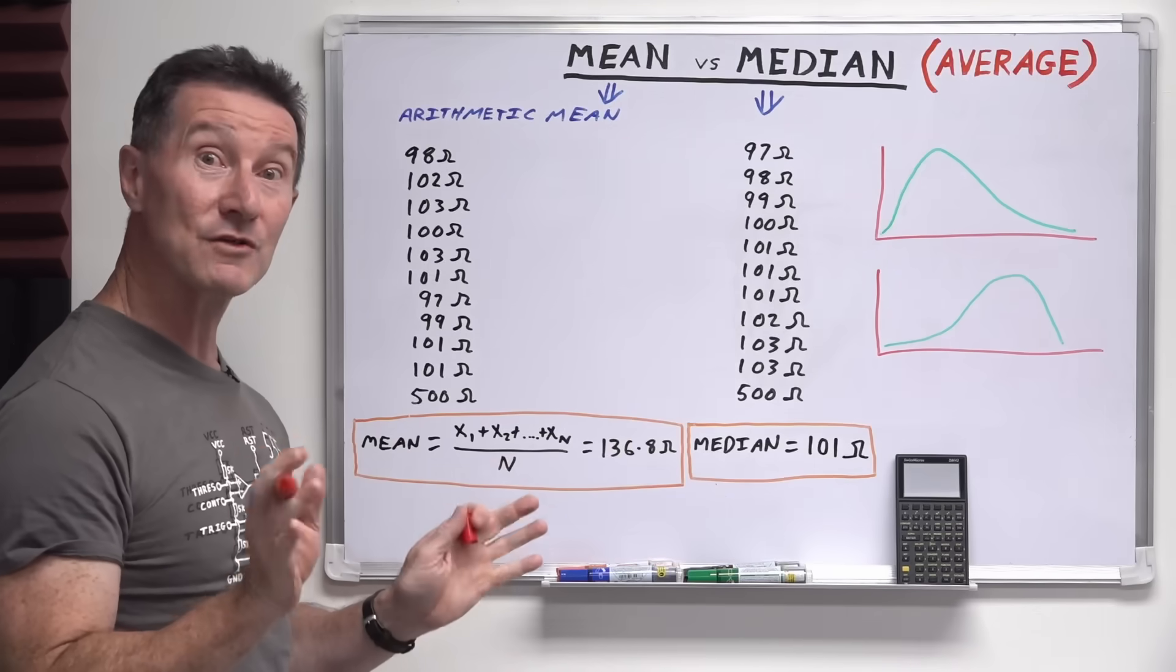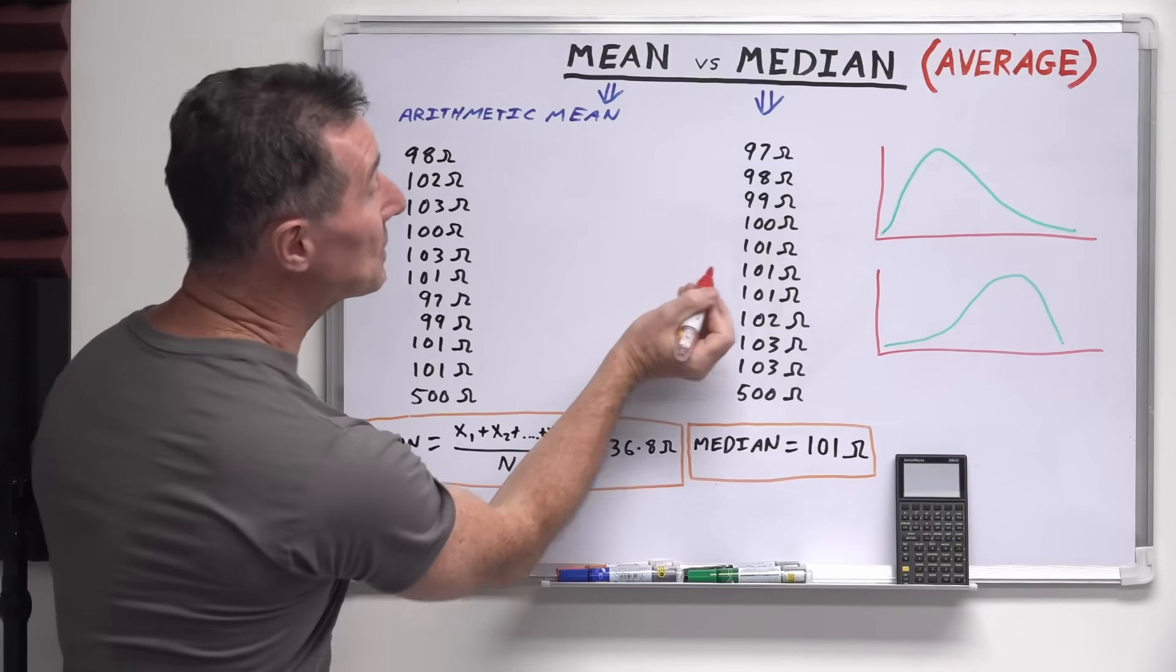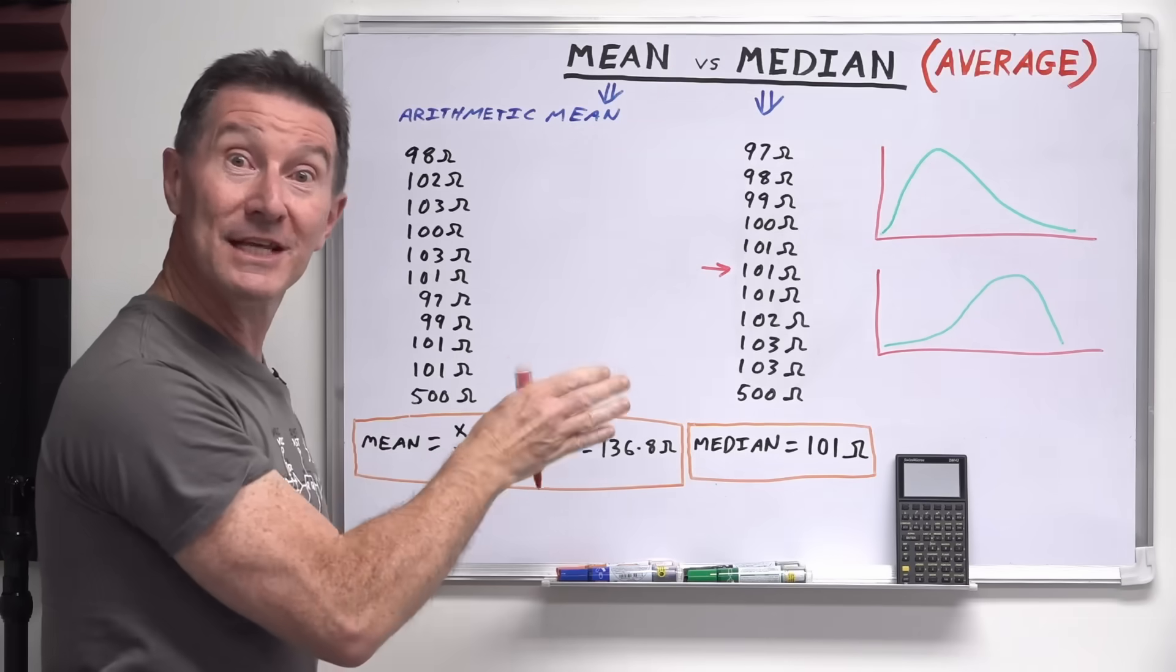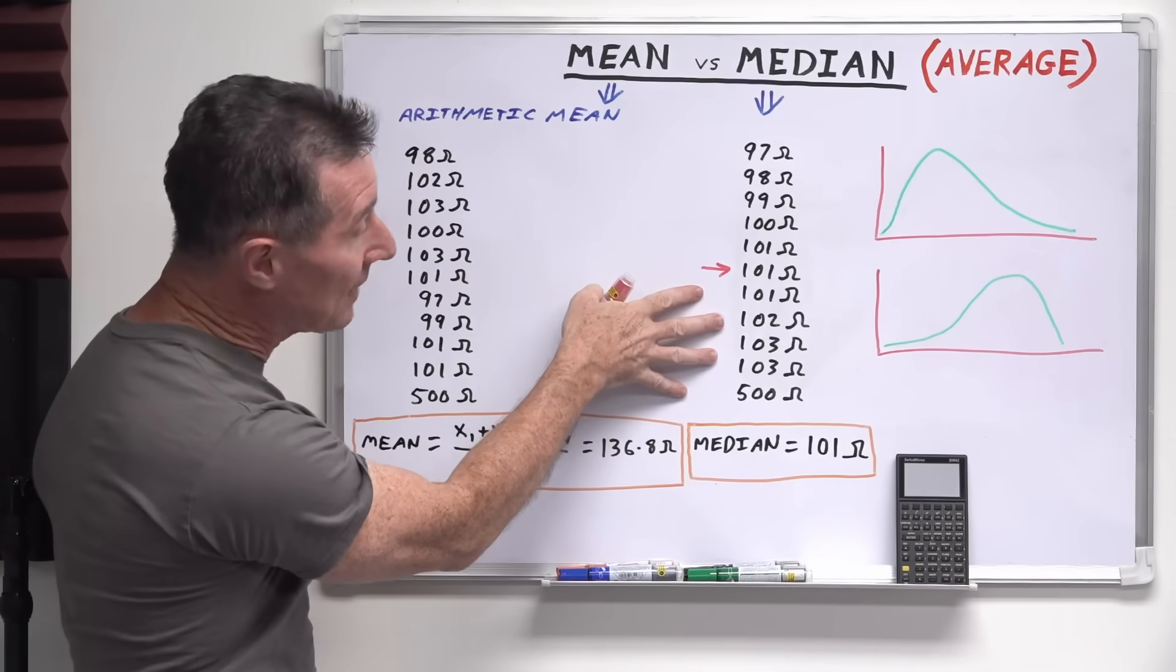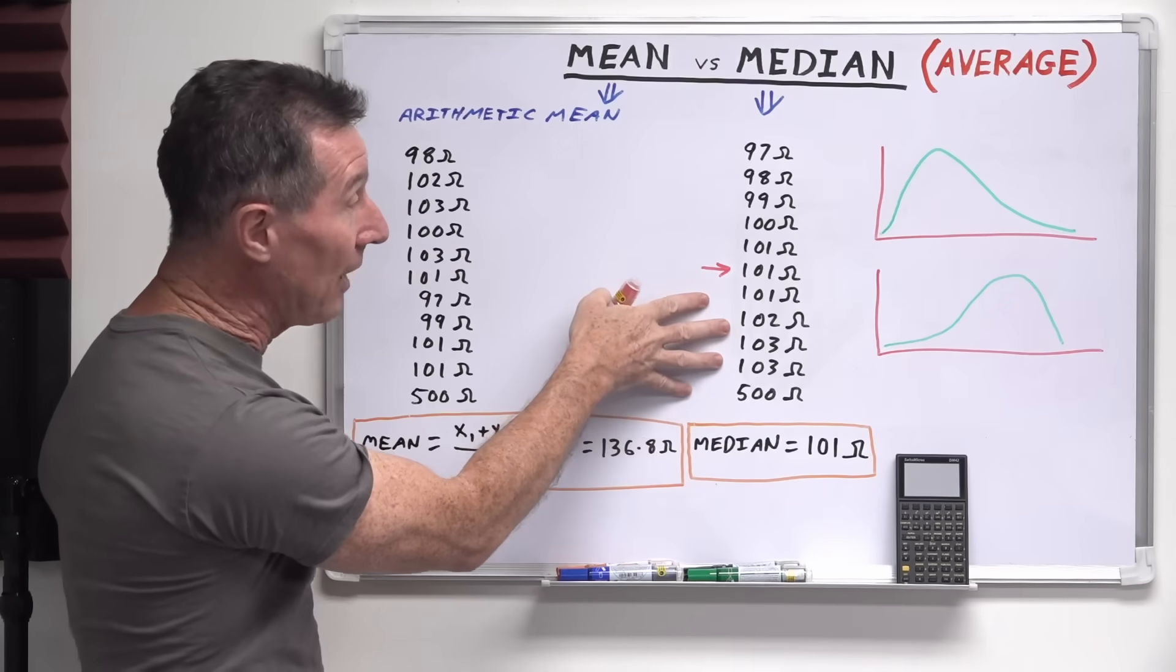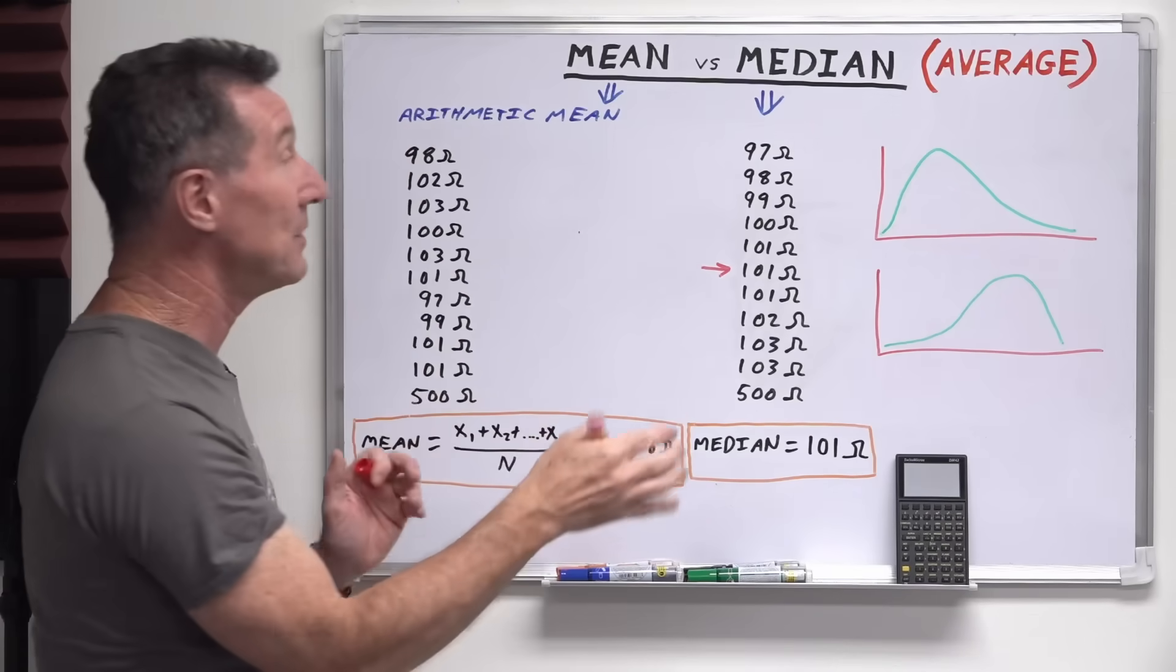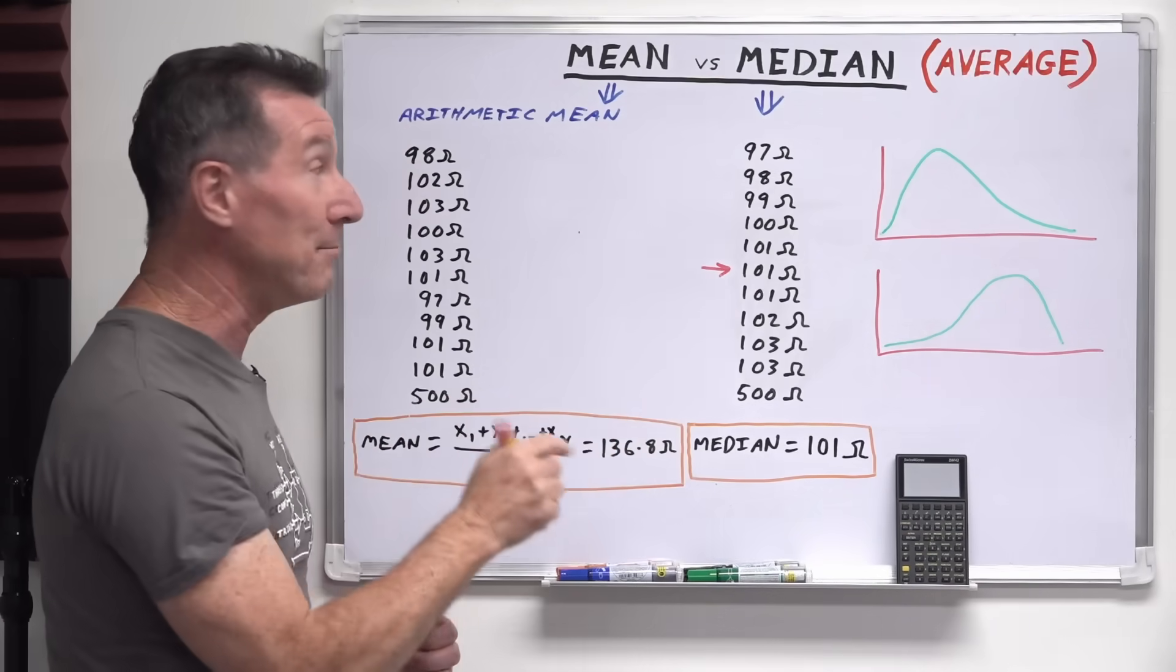So you sort it from lowest to highest like this. So 500 down the bottom. And once you've sorted your data like that, you just take the actual value, the individual value that sits in the middle. So you have an equal number of data points here, in this case five on the upper side and five on the lower side.